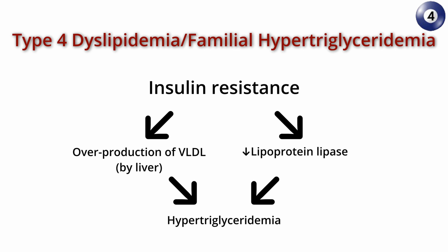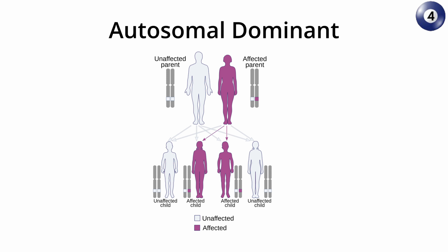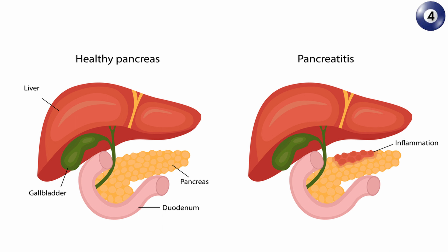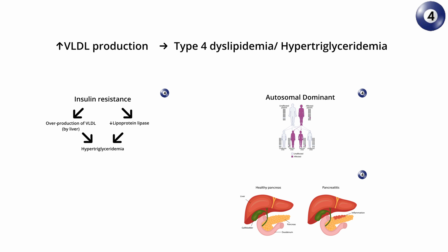This condition is inherited in an autosomal dominant manner. Hypertriglyceridemia increases the risk of acute pancreatitis, similar to type 1 dyslipidemia. This is familial hypertriglyceridemia.